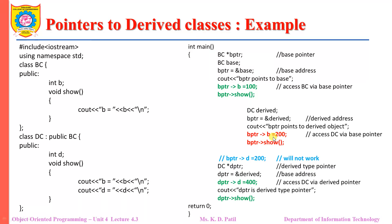Now let us create one more object of class DC. The BPTR pointer, which is created from the base class, is now pointing to the object of the derived class. This cout statement displays BPTR pointer to the derived object on the screen. If we want to set the value of B to 200 using BPTR, the derived class can be accessed via the base pointer since B is a data member of the base class and is inherited by derived class DC. So we can set the value of B to 200, and the show function, being inherited by DC from BC, will display the value of B as 200.